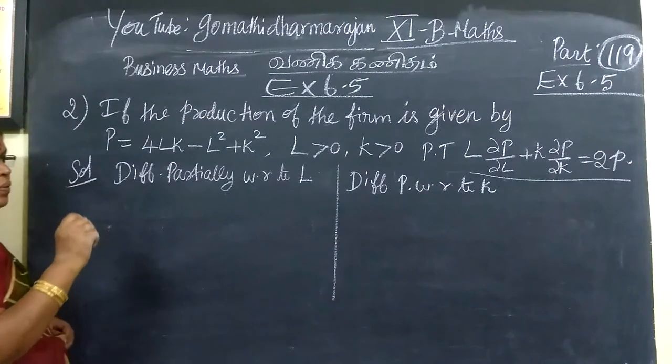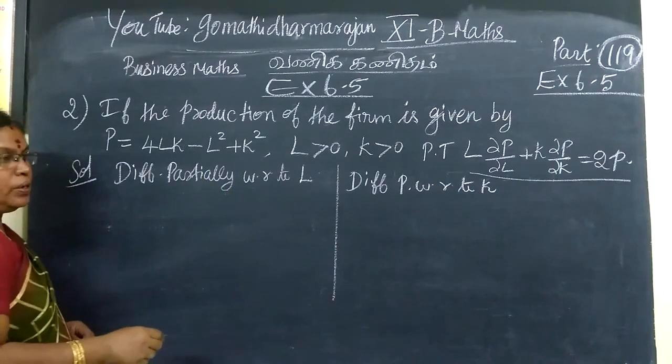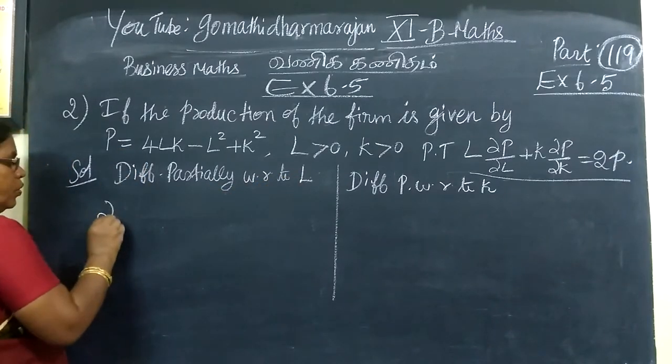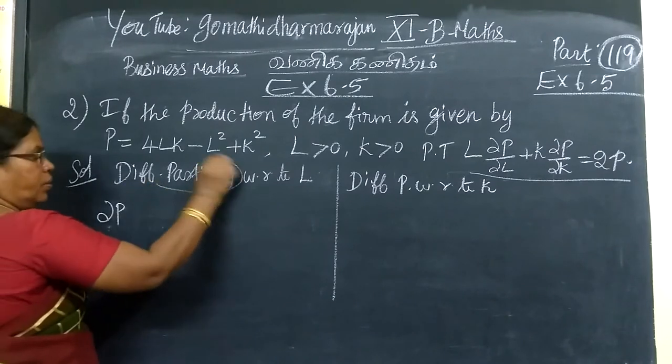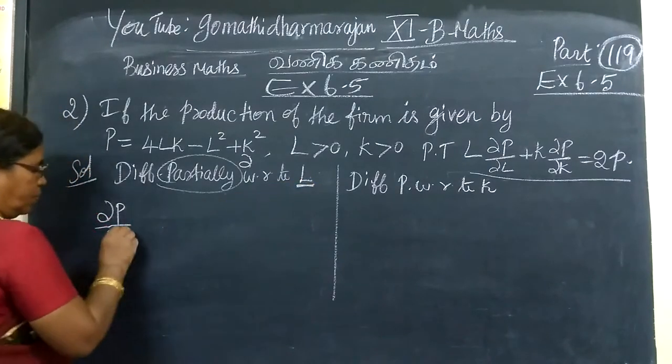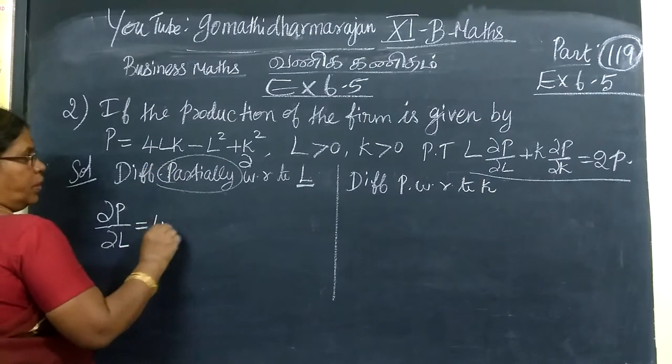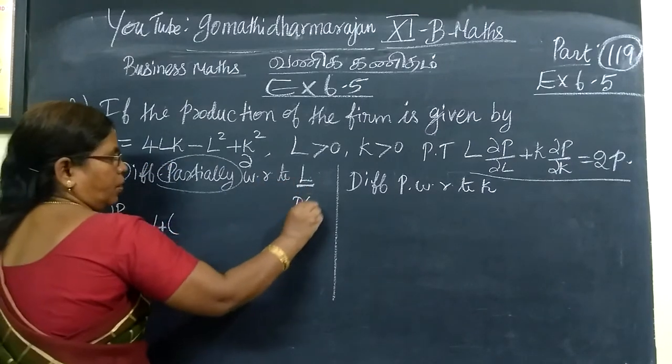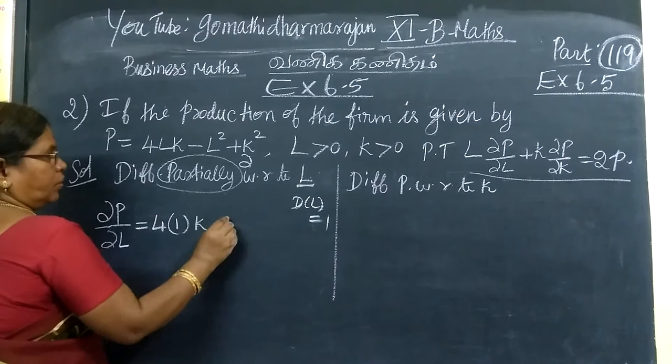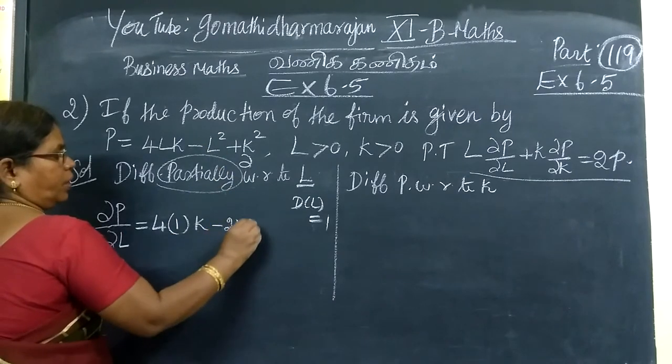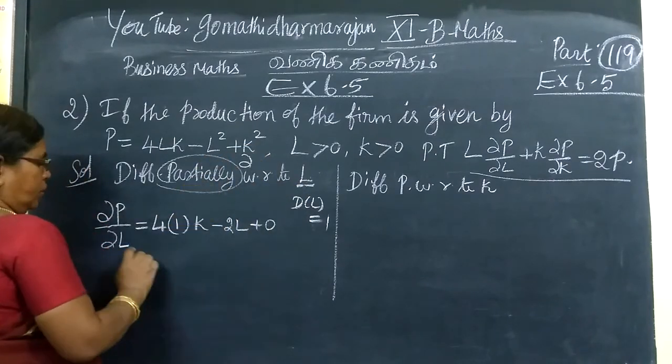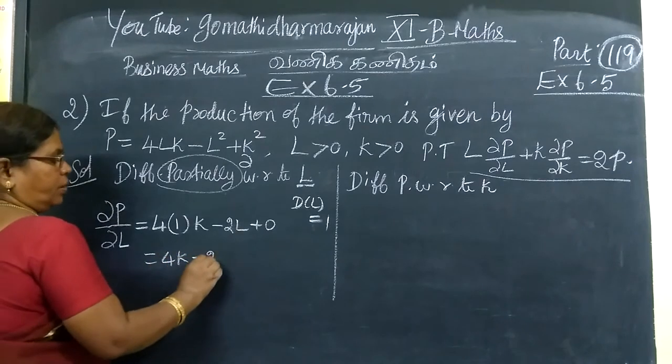Differentiate partially with respect to L, then differentiate partially with respect to K. With respect to L, K is the constant. When we differentiate with respect to L, K is constant. The derivative of 4LK with respect to L equals 4K. The derivative of negative L square equals negative 2L. And the derivative of K square with respect to L is 0 because K is constant. So this equals 4K minus 2L.